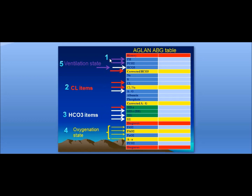Number four: study the AGLAN table, which is formed of measured values and calculated values. Start with: number one, the pH; number two, the chloride items — serum chloride, chloride-to-sodium ratio, corrected bicarbonate, and strong ion difference; number three, bicarbonate items — serum bicarbonate, anion gap, buffer base, strong ion gap, and base excess; number four, oxygenation state of the lung — FiO2, PaO2, alveolar oxygen, partial pressure of oxygen, and alveolar-arterial oxygen gradient; and number five, ventilation state.